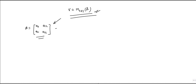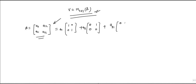Now this matrix we can write as A₁₁·[1,0;0,0] plus A₁₂·[0,1;0,0] plus A₂₁·[0,0;1,0] plus A₂₂·[0,0;0,1]. So this matrix is actually a linear combination of these four matrices, and we are saying any matrix will be in this form and can be generated by these four matrices.